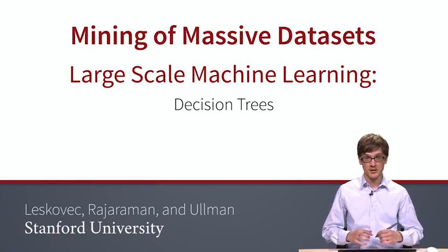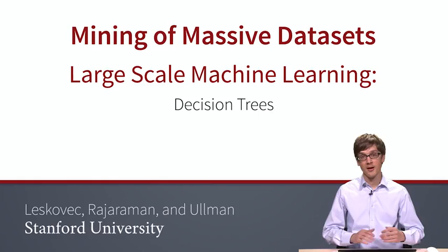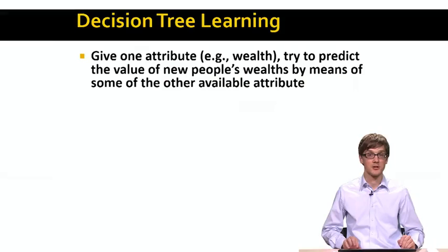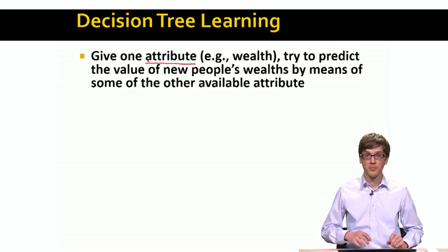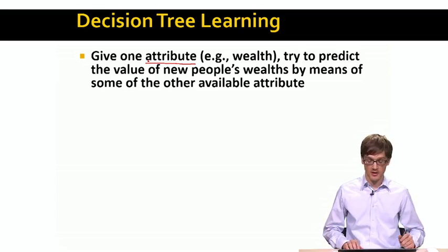And this will allow us to in a much more fine-grained way represent the differences between, let's say, positive and negative examples, if we are talking about classification. So just to remind you, what we are talking about is that given a given attribute, let's say, the wealth of a person, we want to predict the value of this attribute by the means of some other features or attributes available to us.